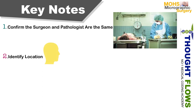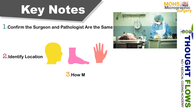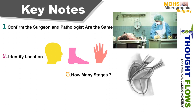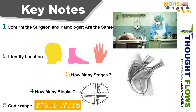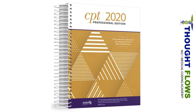The next key point is stages — we have to identify how many stages of skin were removed to select the correct code. For blocks, we need to check how many blocks the skin was divided into at each stage. The last key point is the code range — the code range for Mohs micrographic surgery is 17311 to 17315, found in the CPT book under surgery, integumentary system.